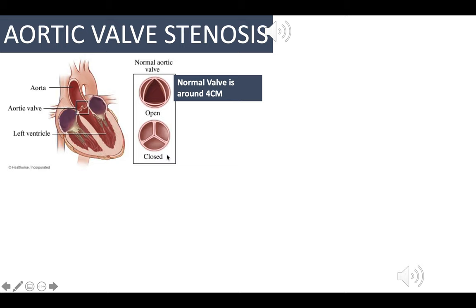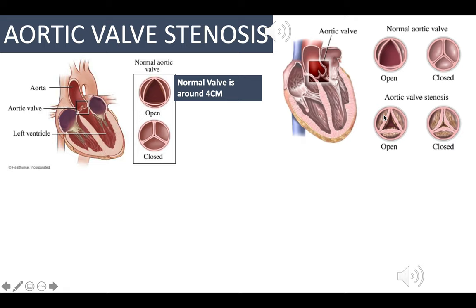A stenotic aortic valve has undergone fibrotic changes as well as sclerosis — meaning hardening due to lipid accumulation, oxidative free radical damage, and fibrotic changes. This causes the aortic valve to become more permanently hardened and less able to open easily.